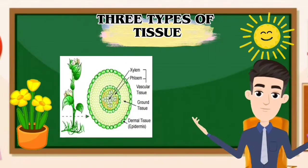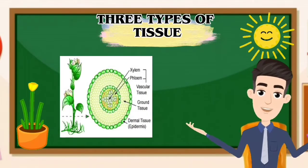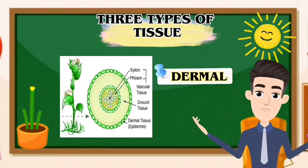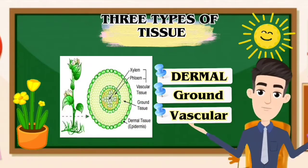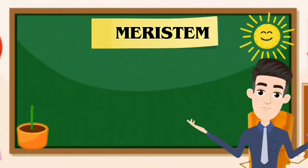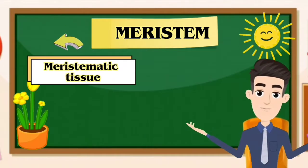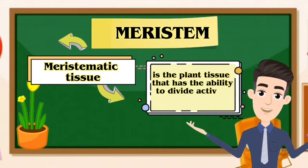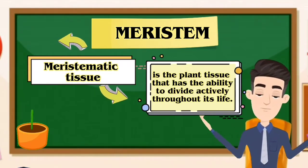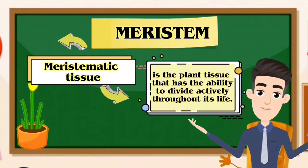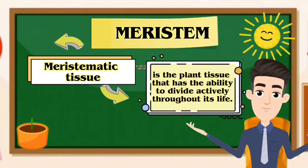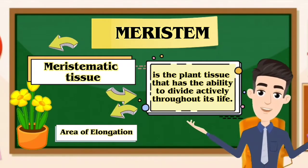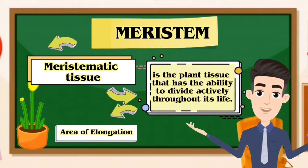There are three types of tissues among plants. The first one is the dermal, the second one is the ground, and lastly it is called the vascular tissue. Meristem contains the meristematic tissue. It is the plant tissue that has the ability to divide actively throughout its life. It can be found on the soft parts of the plant such as newly formed stems and roots. These are called the area of elongation in which the process of mitosis is active.